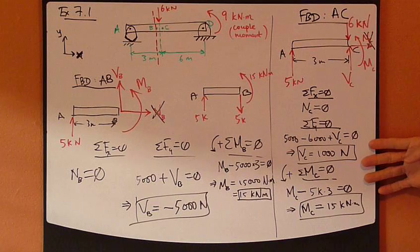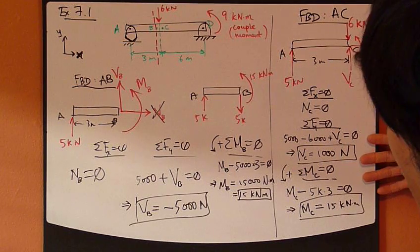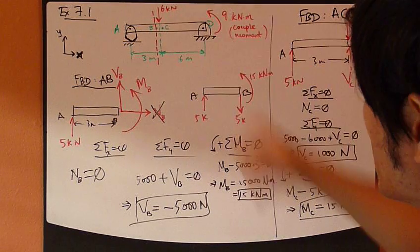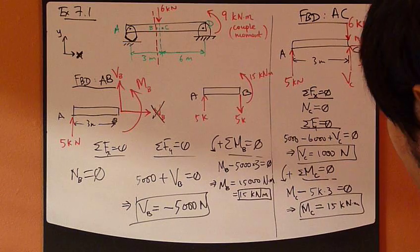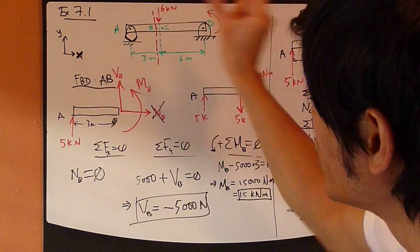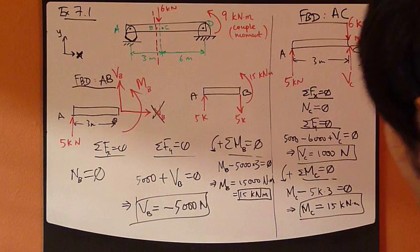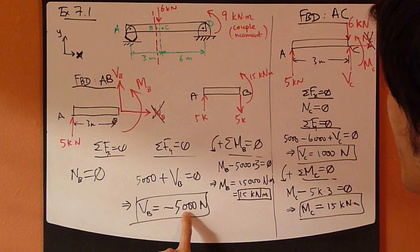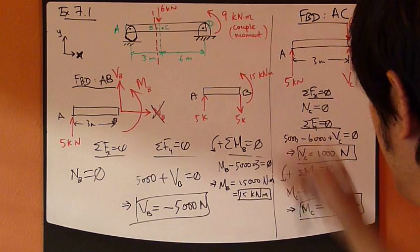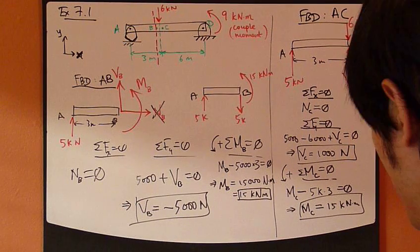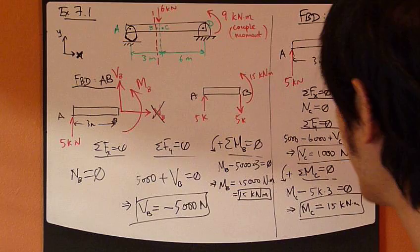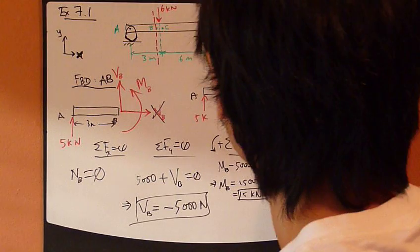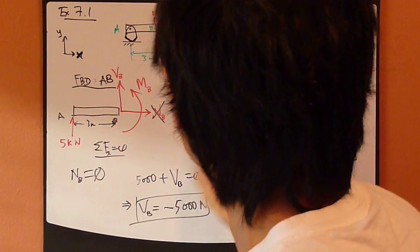So now I have calculated the internal forces at the C point. Let's compare the two, B and C. Now B and C are really close to each other. But the shear force at B is 5,000 going down. Whereas for AC, let's draw AC and I have 5,000 here and I have 6,000 applied force.